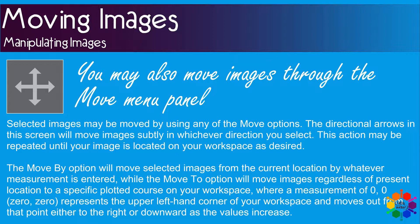The directional arrows in this screen will move images subtly in whichever direction you select. This action may be repeated until the image is located on the workspace you desired. The Move By option will move the selected images from the current location by whatever measurement is entered, while the Move To option will move the images regardless of the present location to a specific plotted course on your workspace.